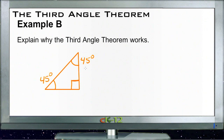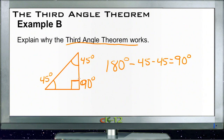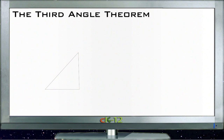The third angle can't be anything other than the remainder of 180 minus the two known angles. If I take 180 degrees and subtract both 45-degree angles, I get 90 degrees. That means the third angle is fixed at 90 degrees — it can't be anything else, because if it were, the total wouldn't be 180 degrees. That's why the third angle theorem works: there's only one angle that will total 180 degrees once the other two are given.